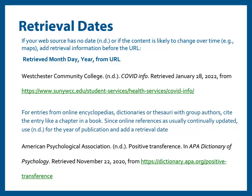When citing sources with no date, use lowercase n, period, lowercase d, period, with no spaces — just as we do in our in-text citations. For web sources with no creation date, add a retrieval date by adding the phrase 'Retrieved [month spelled out in full] [day], [year], from' and then the URL. Use this for sources with no date or with no specific date for the page you are citing, such as a website with only a general copyright date.